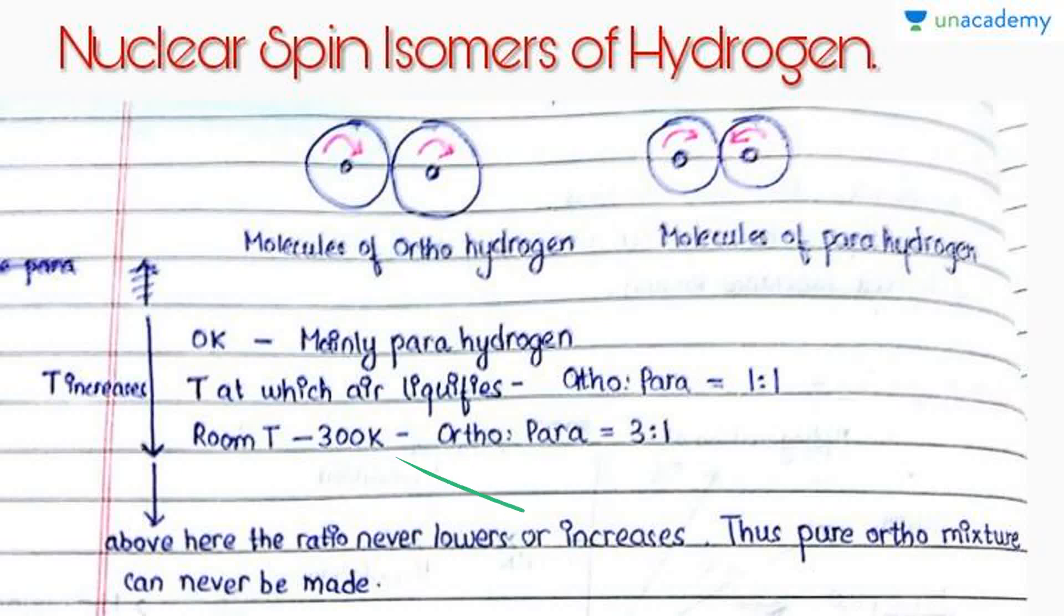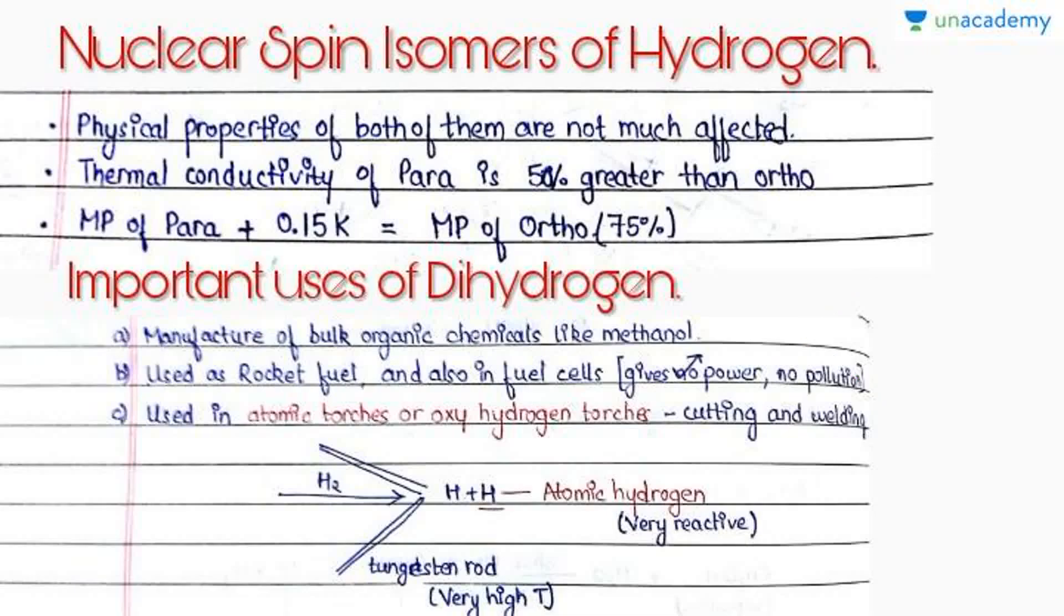These nuclear isomers' physical properties are not affected by their nuclear spin direction. Also, thermal conductivity of para is 50% greater than that of ortho, and melting point of para is 0.15 Kelvin lesser than the melting point of 75% pure ortho. Important uses of dihydrogen: it is used in bulk preparation of organic compounds like methanol.